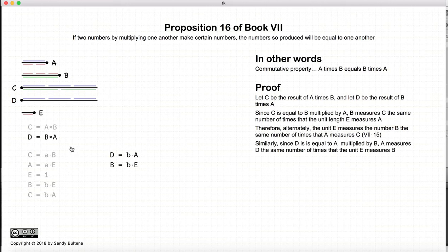So now let's look at d. So d is a multiplied by b. So again, by the definition of multiplication, that means that the unit e measures b the same number of times that a measures d. So let's just look at it visually here for a moment. The unit e measures b three times and a measures d three times. So again, that is the definition of multiplication.